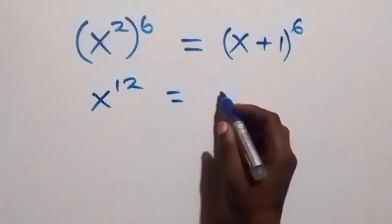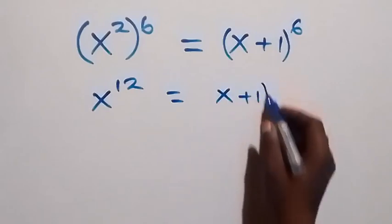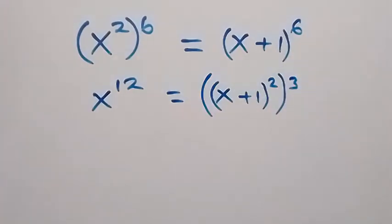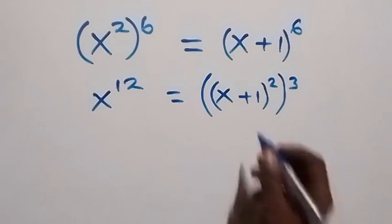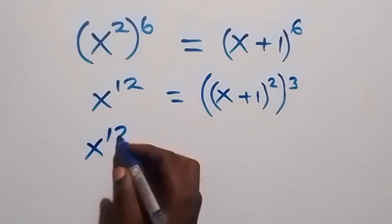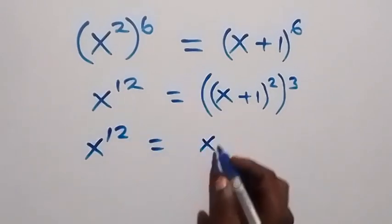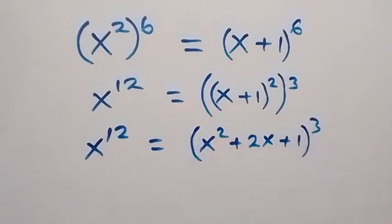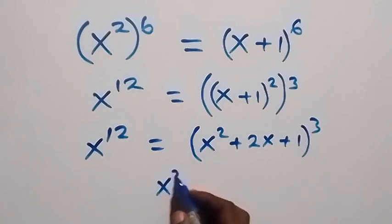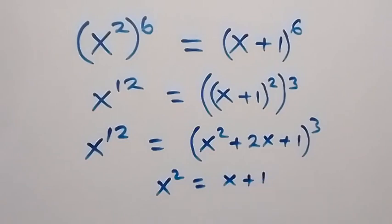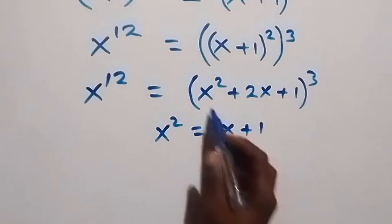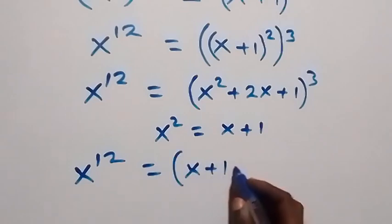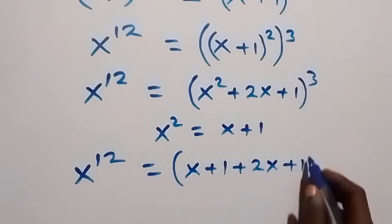From the law of indices, since the powers multiply, this becomes x raised to power 12. Now we can write this as x plus 1 squared also raised to power 3. Then the expansion of what is inside: this gives us x raised to power 12 equals to x squared plus 2x plus 1 inside, then raised to power 3. We should recall that x squared is the same thing as x plus 1. So when we substitute, we have x raised to power 12 equal to, in brackets, x plus 1 then plus 2x plus 1, all raised to power 3.